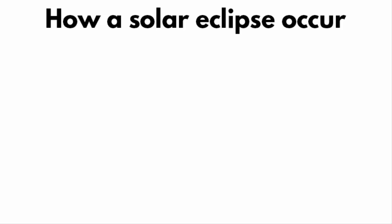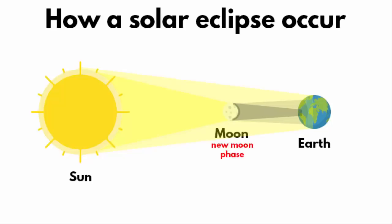In this video, we will learn how a solar eclipse occurs. It occurs when the moon gets between the earth and the sun. Now, to cover the entire sun, the moon has to be in a new moon phase.